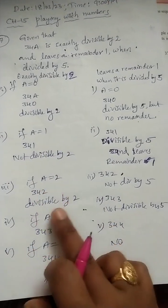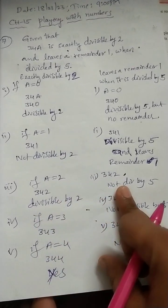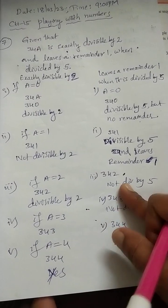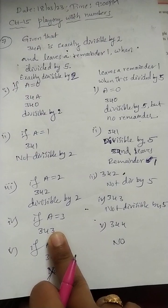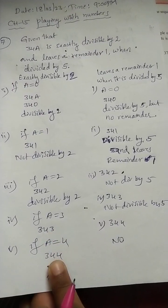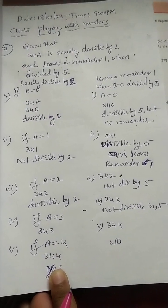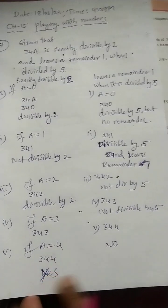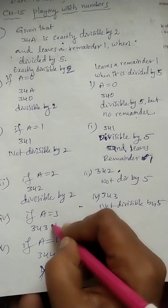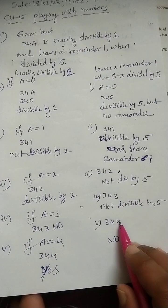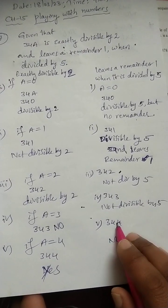If a is equal to 2, we get 342. It is exactly divisible by 2 but it is not divisible by 5, so this condition is not satisfied. Go for next. If a is equal to 3, we get 343. It is not divisible by 2, and also not divisible by 5.